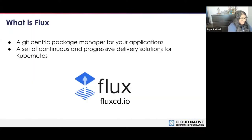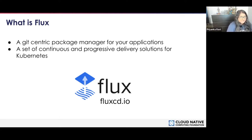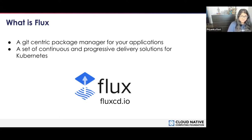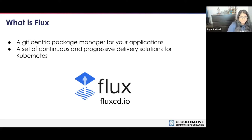What is Flux? Flux is a Git-centric package manager for your applications, though Git isn't the only system you can use with Flux. It provides a set of continuous and progressive delivery solutions for Kubernetes — a natural extension of the benefits that already come with Kubernetes. At its core, it continuously monitors your version control system and applies the desired state declared there. It also hard-applies on a schedule, so if things get out of sync, it sets them back to your desired state. Flux reduces developer burden by removing the need for manual deployment processes — everything's automated.